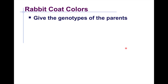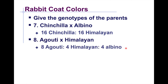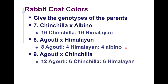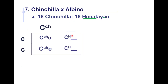Now we have reverse problems on rabbit coat colors — given the offspring phenotypic ratios, we determine the parents' genotypes. Problem 7: chinchilla crossed with albino gives 16 chinchilla and 16 Himalayan offspring. The albino parent must be cc (only one possible genotype). Since one offspring type is Himalayan, and the albino parent contributes small c, the chinchilla parent must carry a Himalayan allele. Therefore the chinchilla parent's genotype is CH c (chinchilla-Himalayan).